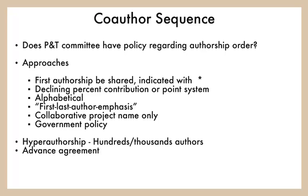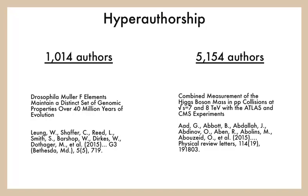Approaches include shared first authorship, credit based on the fraction of total work performed, equal contribution, or an alphabetical listing, though authors with surnames late in the alphabet tend to avoid this approach. Another approach is first and last author emphasis, where key researchers are listed at the beginning and the end, but other co-authors are listed alphabetically by institution. There is also group name only, or if it is a government project, there may be a policy that dictates author order. An advanced agreement will ensure all co-authors are aware of expectations before the grant, project, or writing begins.